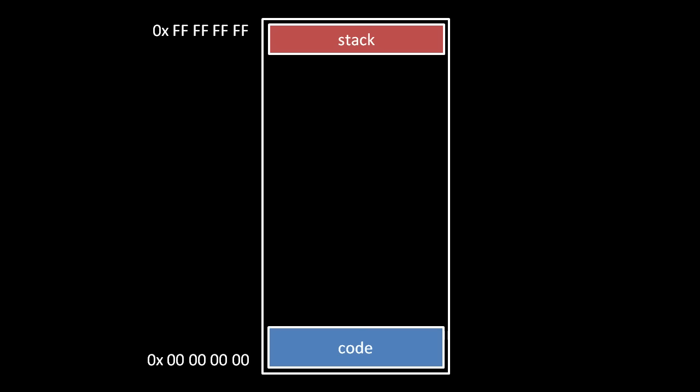The common arrangement in PCs is to store the stack at the top of a process's address space, and the text — the code of the process — at the bottom. All the remaining space in between is available for the heap.